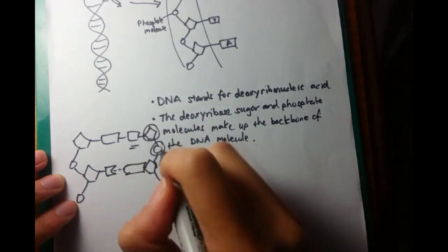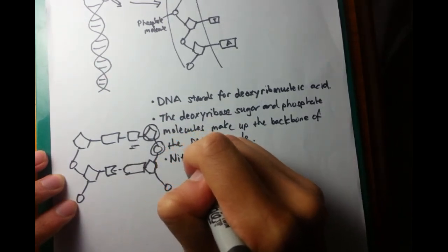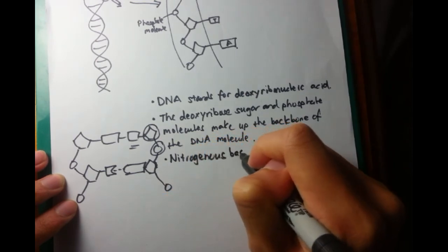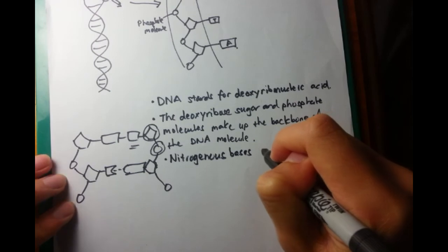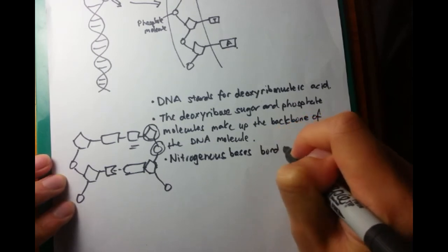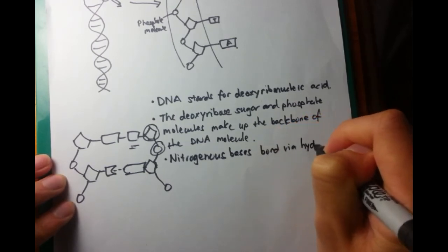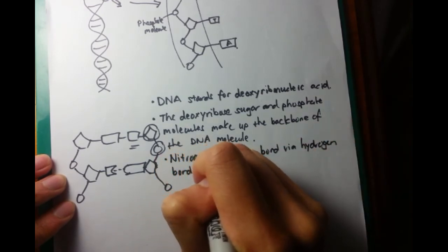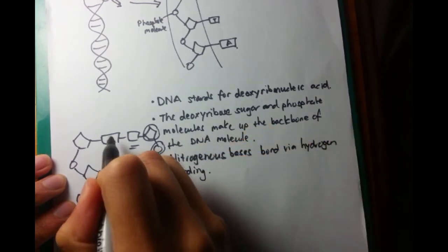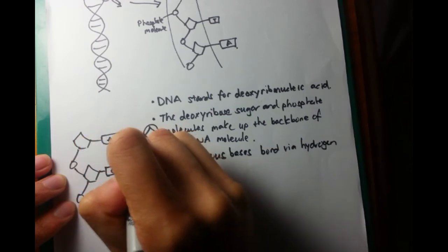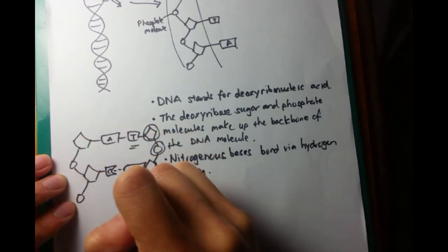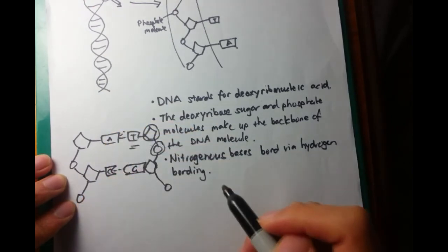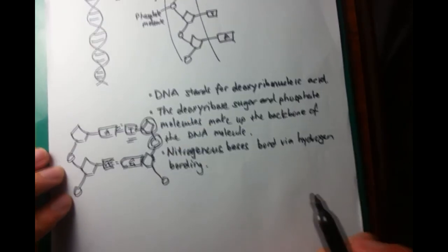Then I'll next talk about the nitrogenous bases. So that's these guys here. So in this case, this might be an A, this might be a T, this might be a C, this might be a G. And these bonds in between, they're usually represented as dotted lines and that means that they are hydrogen bonds.